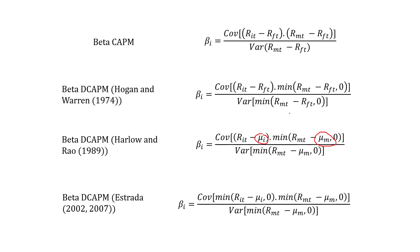The last model is Estrada. Estrada also takes the minimum with the stock return, and also uses the average return and average market return — as was the case with Harlow and Rao. What it says is: if the stock return is negative — that is, less than its average return — then we take that value; otherwise, if it is positive, we take zero. That is what this minimum operator means.